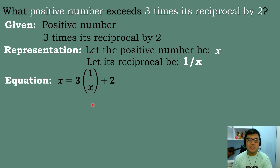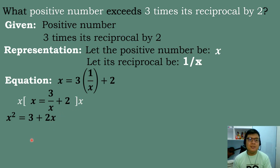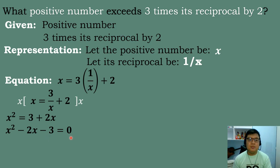We simplify this rational equation into a quadratic equation. Multiplying both sides by x: x squared equals 3 plus 2x. Then we rearrange into standard form: x squared minus 2x minus 3 equals 0, by transposing positive 2x and positive 3 to the other side.